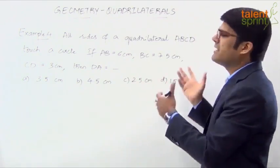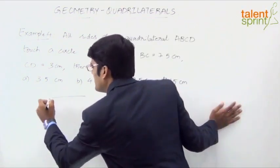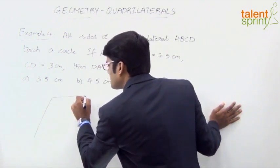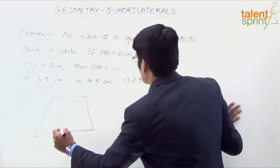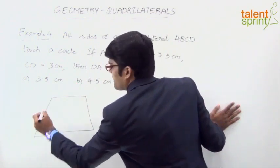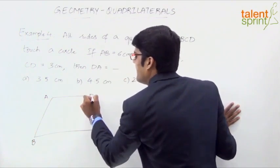So let us take some quadrilateral ABCD. You can take any shape. So let us say the quadrilateral ABCD. This is the quadrilateral ABCD. So let us say this is A, B, C and D.